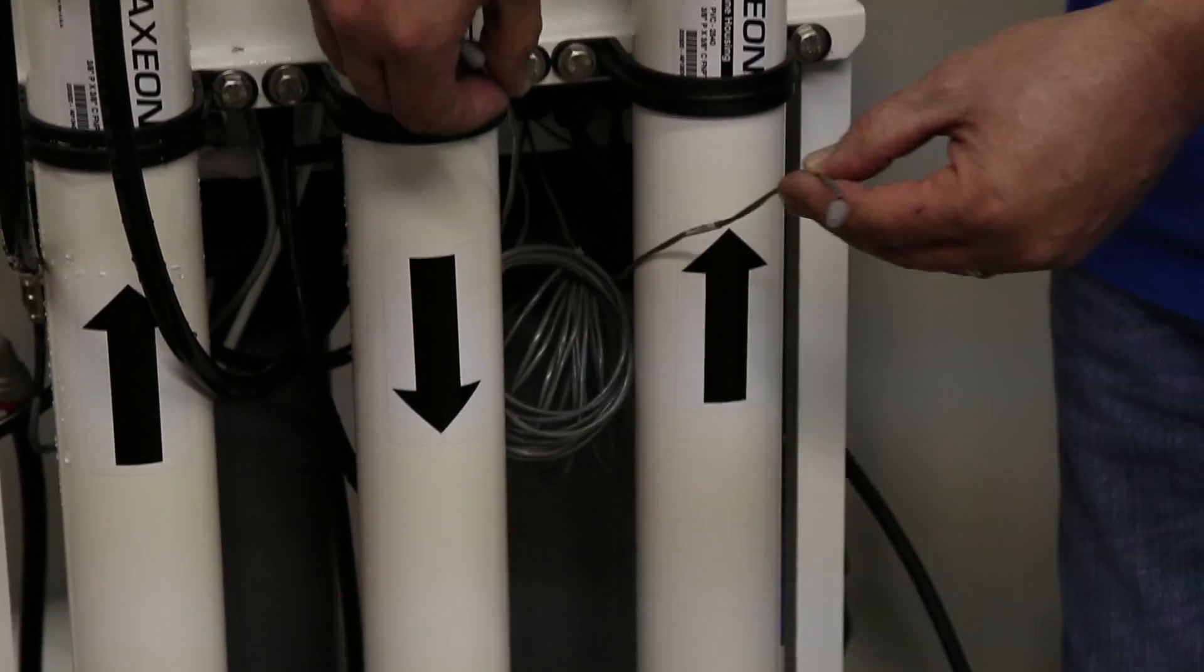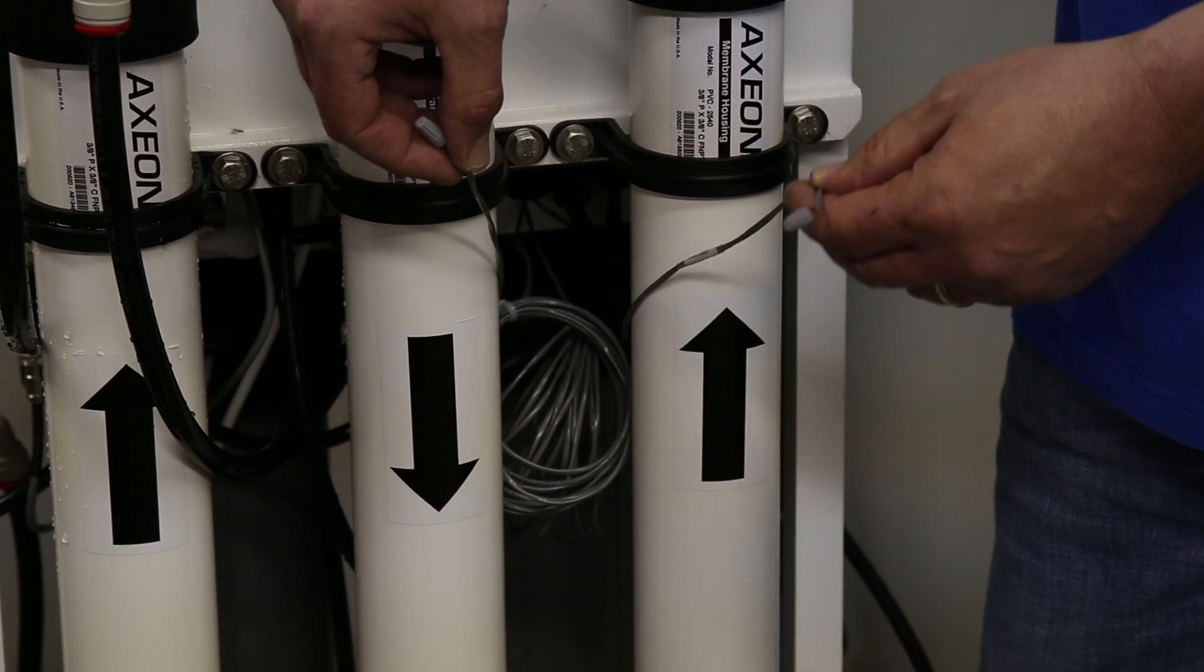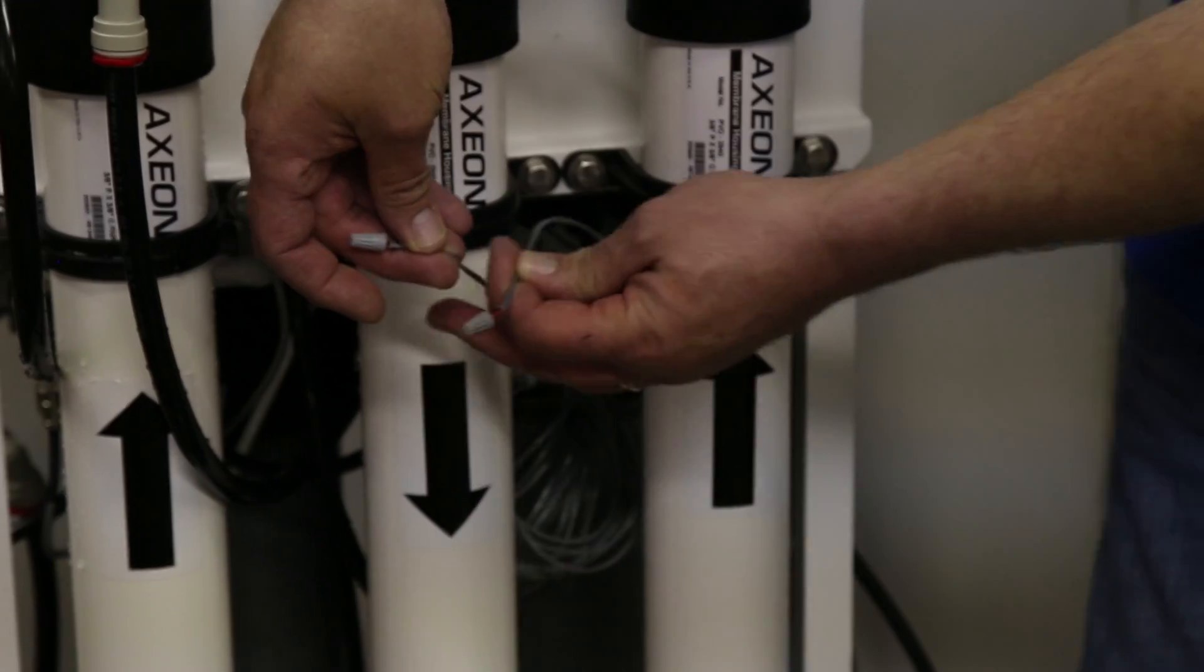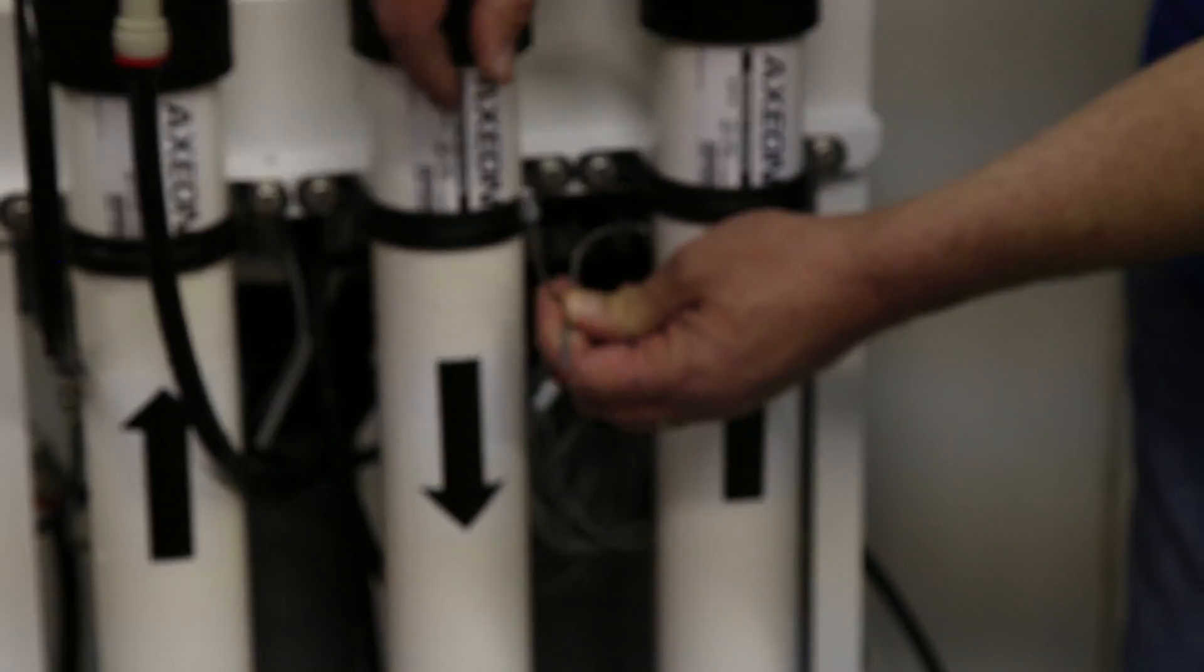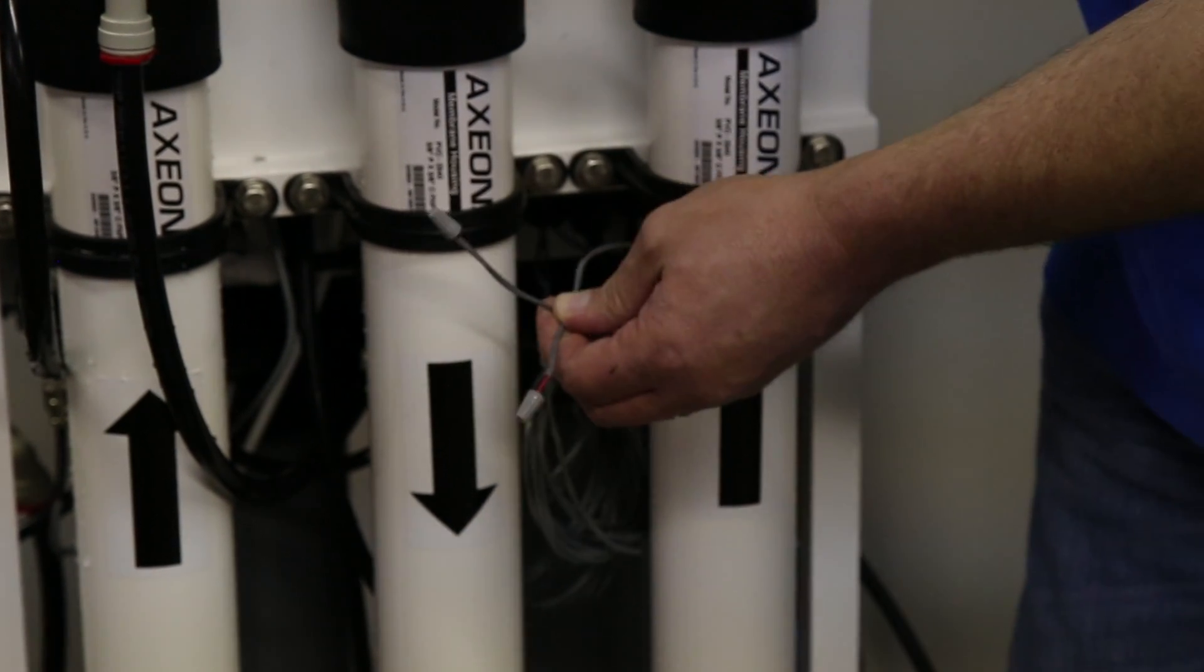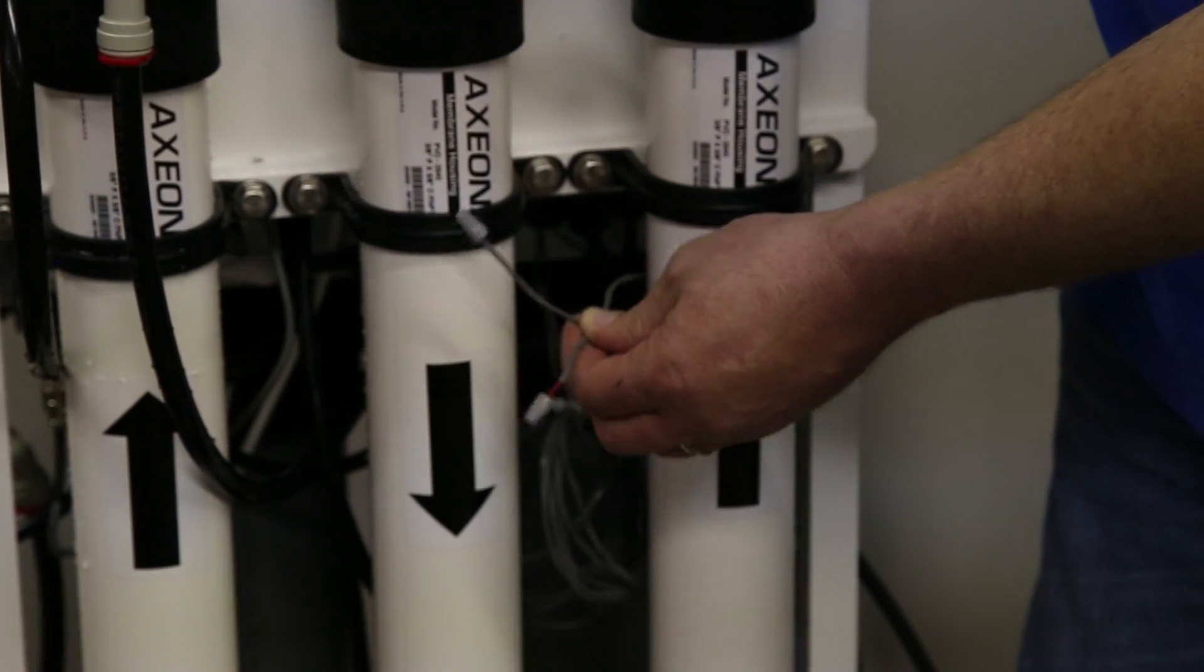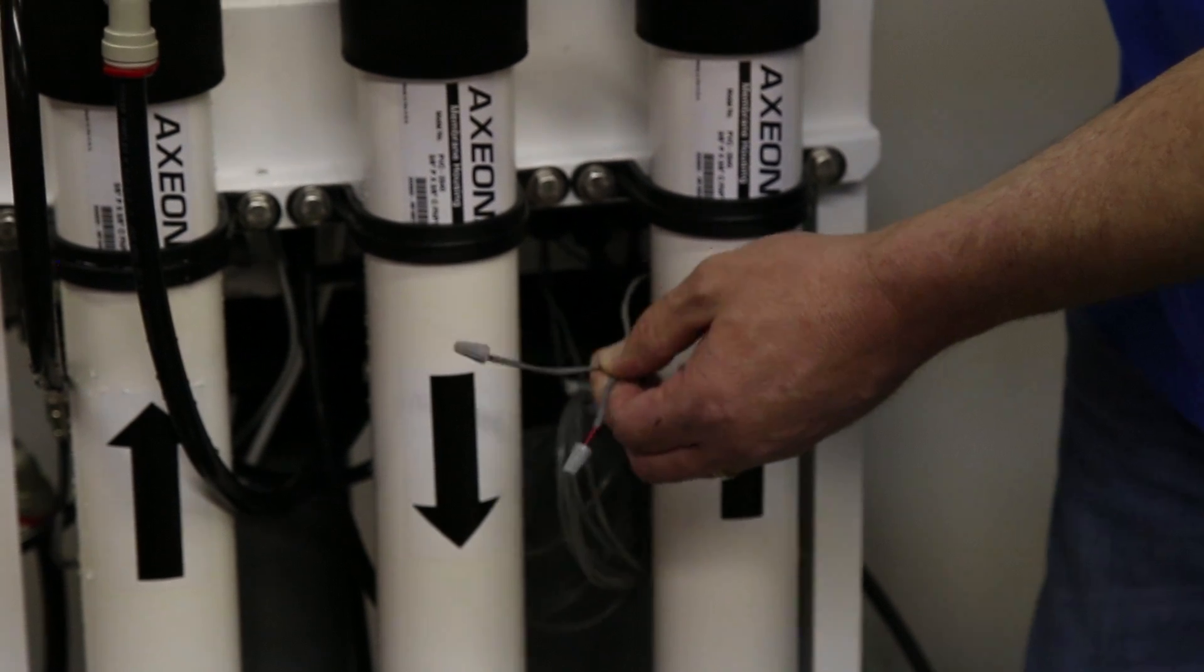These are actually control circuits to turn the RO on and off. They are no voltage switch closure circuits. So you don't want to put voltage to them or you'll actually damage the board in the controller.